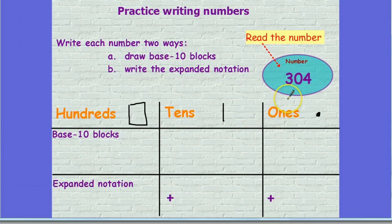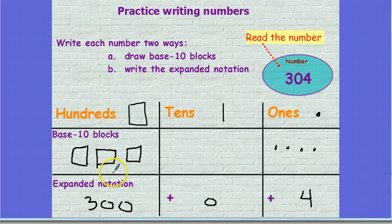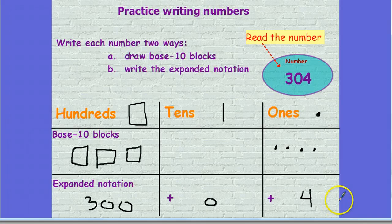I want you to try this number. Let's read this number together: 304. This one's tricky — give it a try. Press pause to work, press play when you're ready to check. Starting with the hundreds, I have three hundreds, so I drew those right here. Tens — I have zero tens, so there's nothing I can draw. And ones — I have four ones, so I drew those right here. In expanded notation: 100, 200, 300 for my hundreds. No tens, so I wrote a zero. And four ones. So expanded notation is 300 plus zero plus four. Another way to write expanded notation for this is simply 300 plus 4.